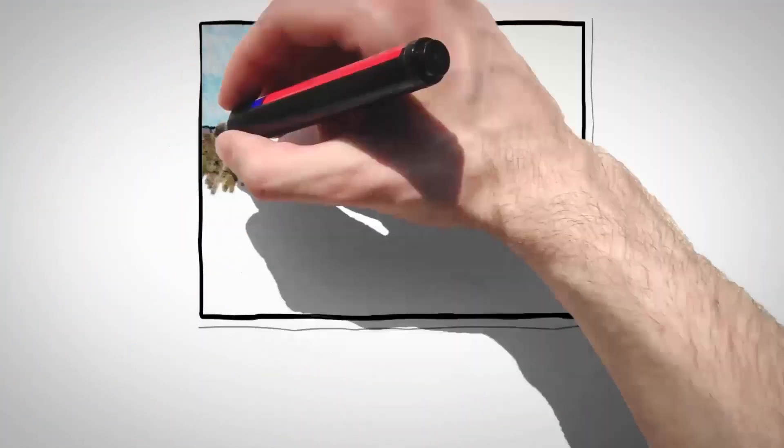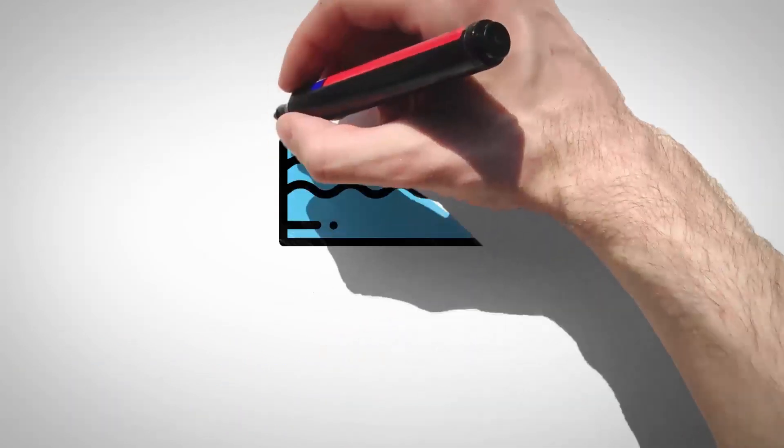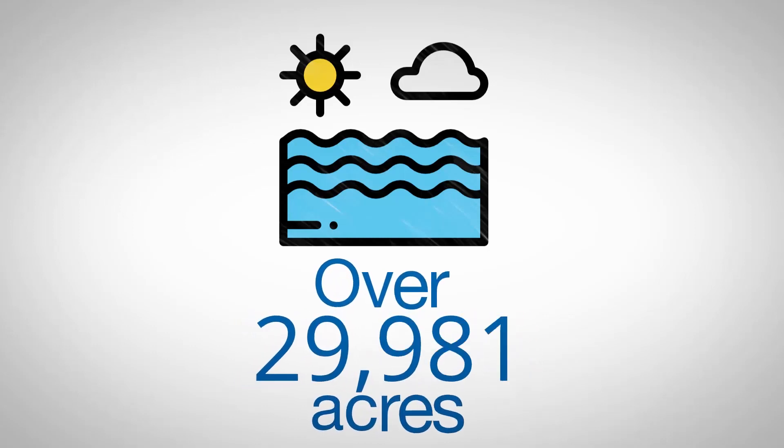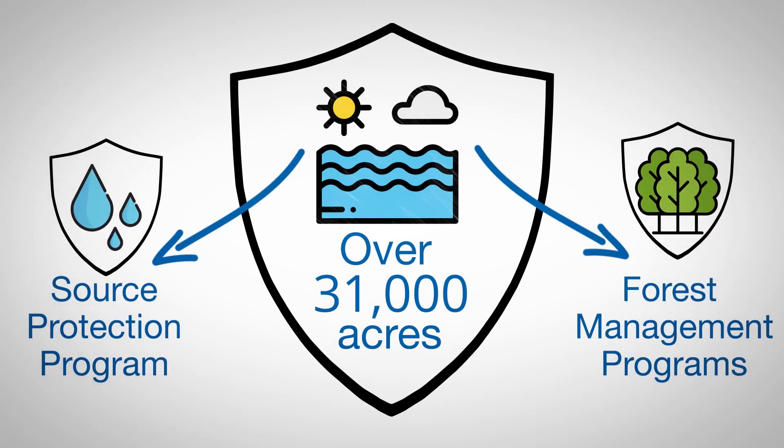Your drinking water comes from the Barkhamstead and Nepaug reservoirs, which hold 40 billion gallons of water. Over 31,000 acres of MDC watershed land safeguards the reservoirs through source protection and forest management programs.